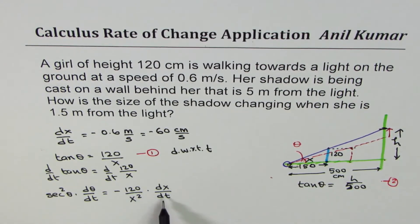We know dx/dt, which is -60. We know x at this instance of time is 150. So we can always find secant square theta d theta/dt. Now, let's differentiate this part also.